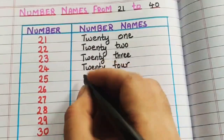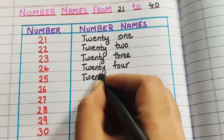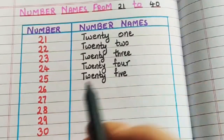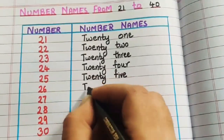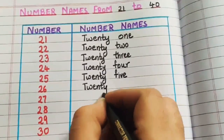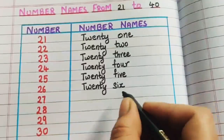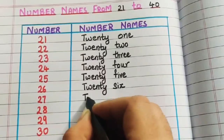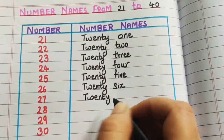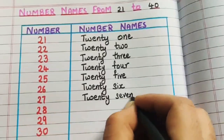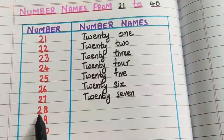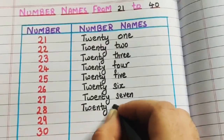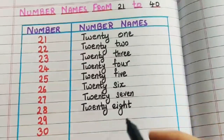25: T-W-E-N-T-Y F-I-V-E. 26: T-W-E-N-T-Y S-I-X. 27: T-W-E-N-T-Y S-E-V-E-N. 28: T-W-E-N-T-Y E-I-G-H-T.